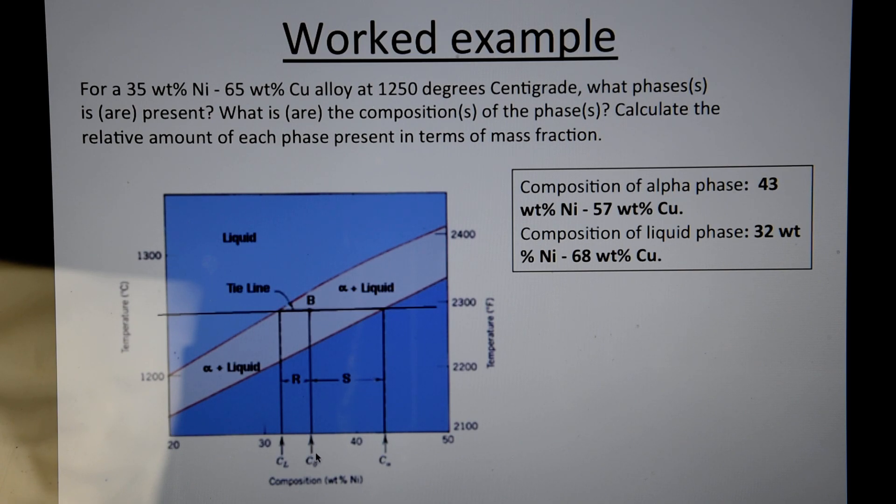So first of all, to answer the first question, there are two phases present because we are in the alpha plus liquid phase region. Now, the second is asking us, what is the composition of the phases? So C alpha is approximately 43% nickel and C liquid, which is the composition of liquid, is 32% nickel approximately.